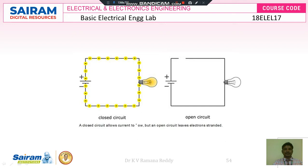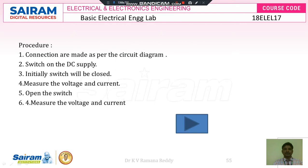Then there is one more circuit called the open circuit. In the open circuit, there is a DC voltage source with positive and negative terminals, but the conductor is broken and the switch is in open position. During open circuit condition, there is no flow of current through the bulb — the bulb is off. During open circuit condition, current is equal to 0 and voltage is equal to maximum.